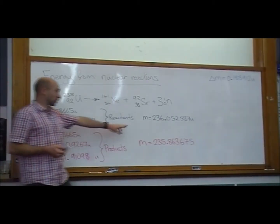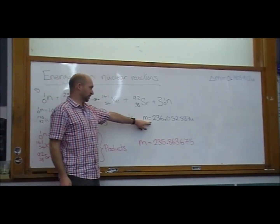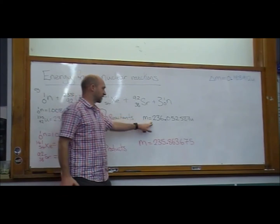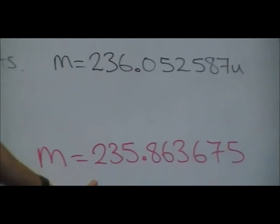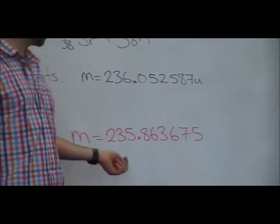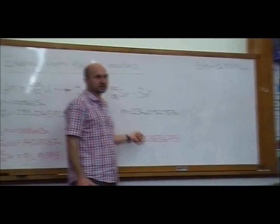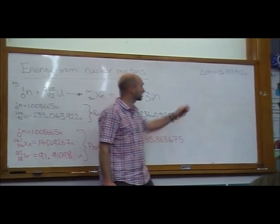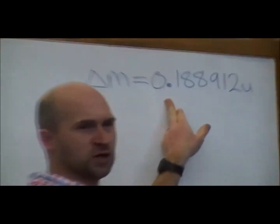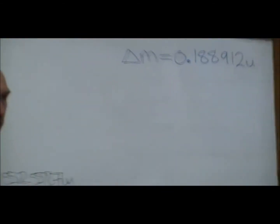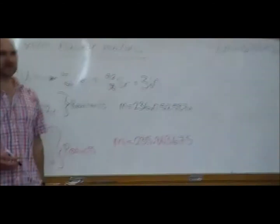Working out the totals, we started with 236 point something, and by the time the reaction finished, we got 235 point something. If we work out the difference between those two numbers to work out how much energy was lost, we can see it's around about 0.2 U. The U is the atomic mass unit.